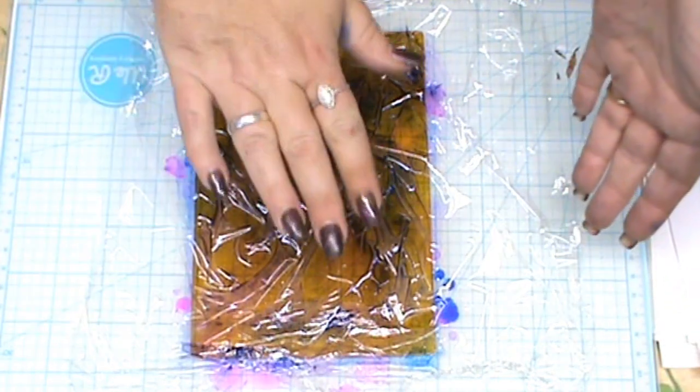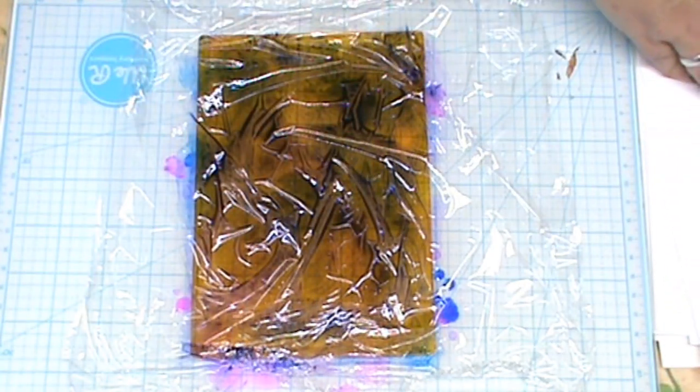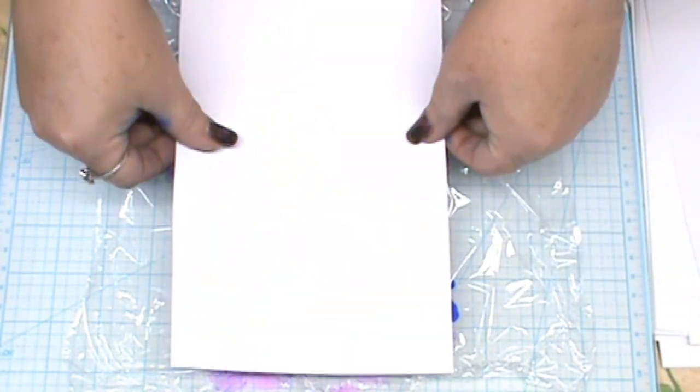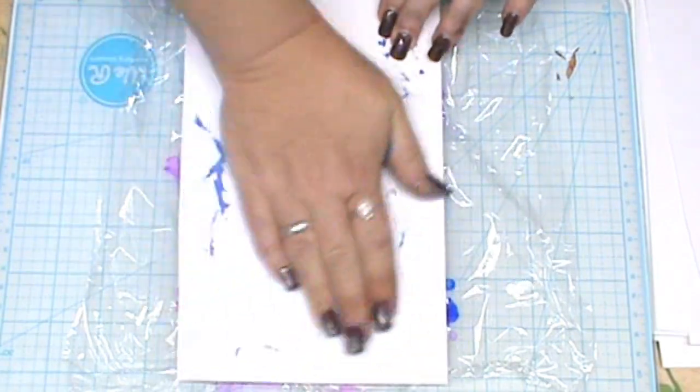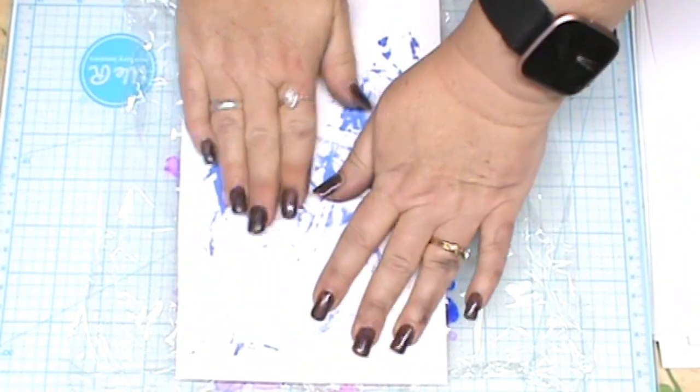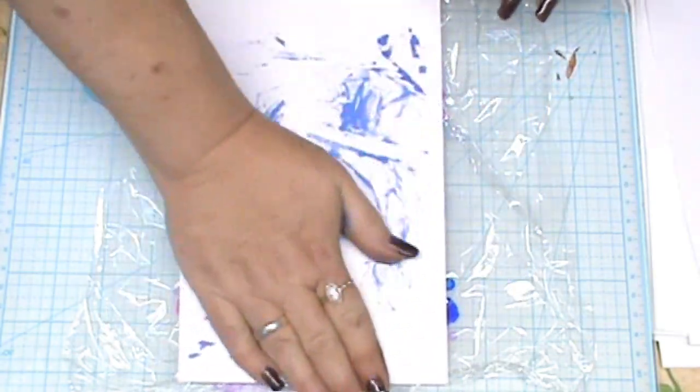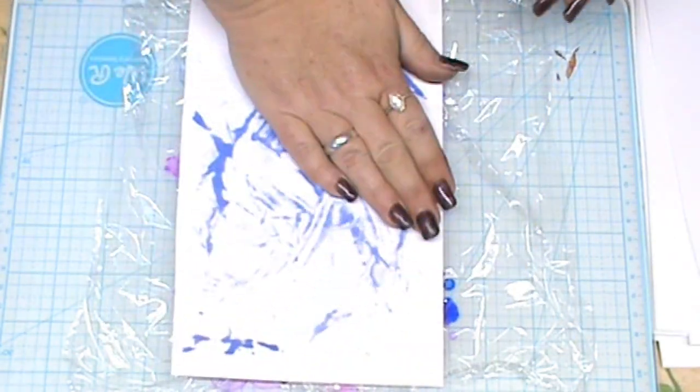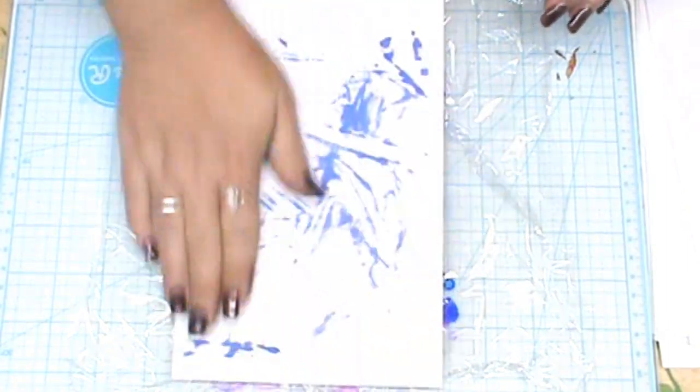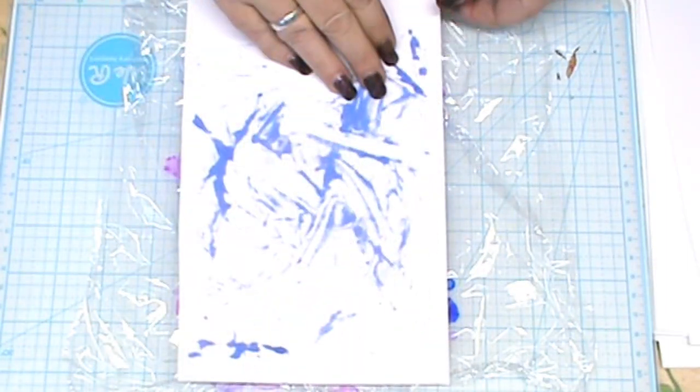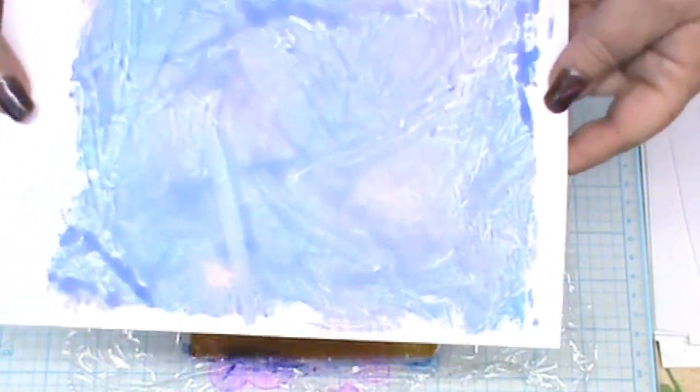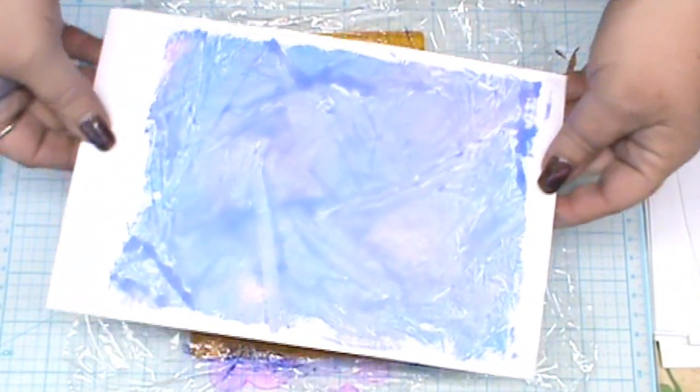Now don't waste that ink. Take your plastic wrap, put it back on your gel plate. Grab yourself another sheet of card stock, and rub that out. You get a whole unique, different print. Same colors, but a different look because you're going to get all those wrinkles in there from the plastic wrap.